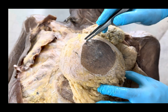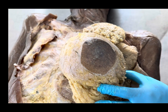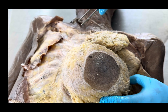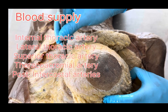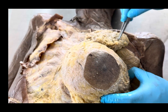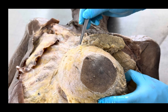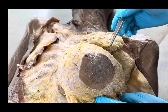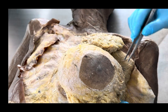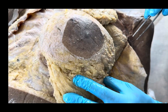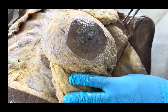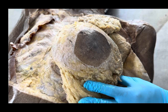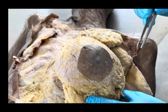The blood supply of the mammary gland comes from: perforating branches of the internal thoracic artery; branches of the axillary artery — including the superior thoracic, thoracoacromial, and lateral thoracic arteries; and the posterior intercostal arteries. Venous drainage follows the same pattern. Notably, the posterior intercostal veins drain into the internal vertebral plexus, which ultimately drains into the dural venous sinuses — this explains the spread of breast cancer as metastasis to the brain.